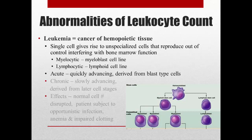We can also divide leukemias into acute, which advances quickly and typically involves an early blast-type cell becoming cancerous, and chronic, which involves a later developmental stage and advances more slowly. Combining these gives four basic types: acute myelocytic, chronic myelocytic, acute lymphocytic, and chronic lymphocytic leukemia. Different types have different outcomes, which is beyond the scope of this lecture.